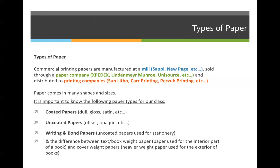There are coated papers — dull, gloss, satin, etc. — as identified on the previous slide. There are uncoated papers, called offset or opaque papers. There are also bond and writing papers, which are uncoated papers traditionally used to print stationery-type things. Coated and uncoated papers might come in 70, 80, or 100 pound weights, while bond and writing paper — even though it looks exactly the same — would come in 24 pound or 28 pound weights.